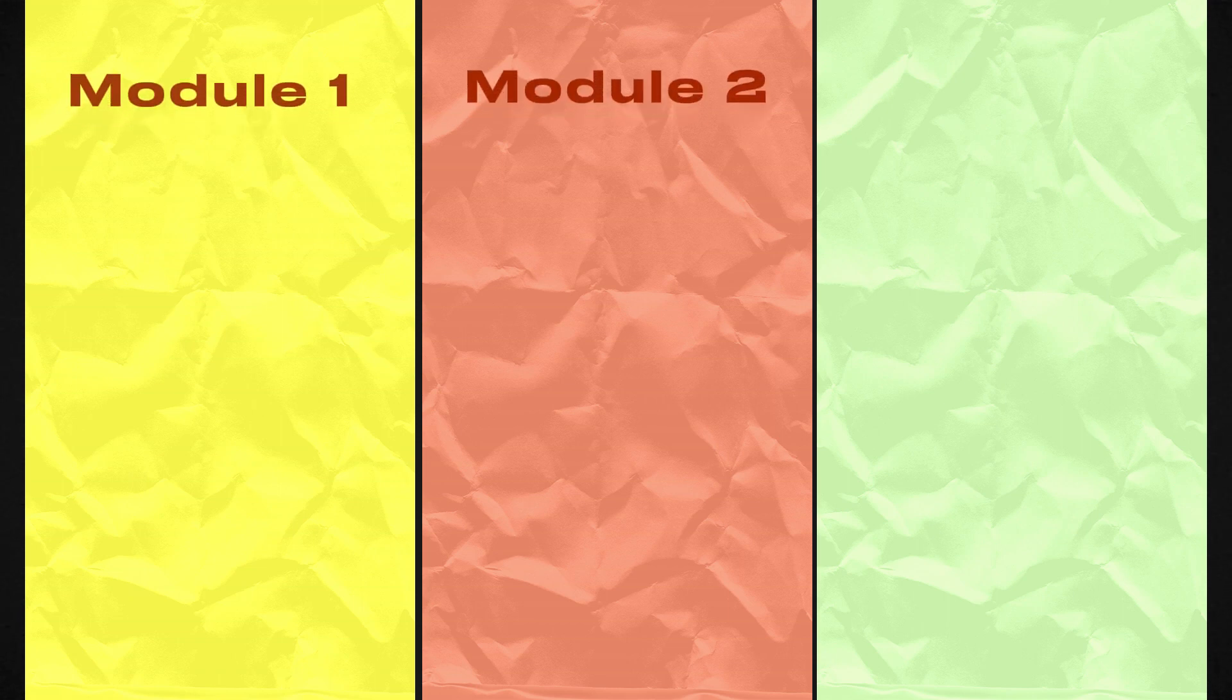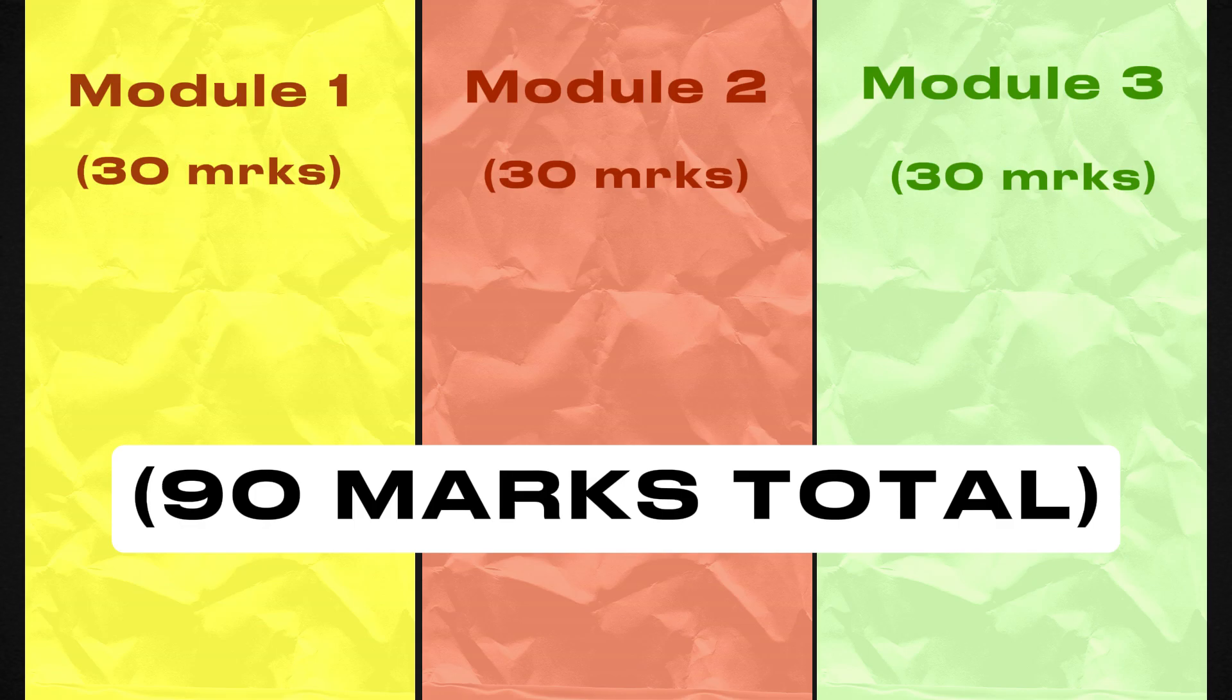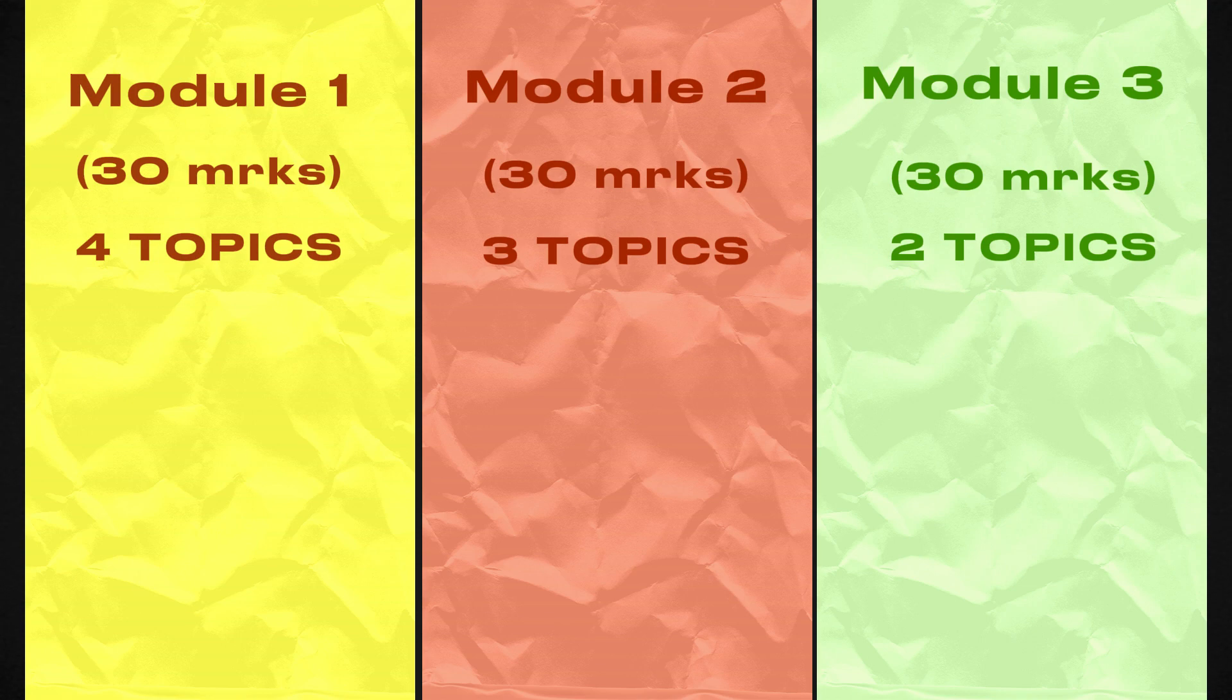Modules 1, 2, and 3 are valued at 30 marks each, forming a paper with a total of 90 marks. But an uneven distribution emerges, with CXC betting on 4, 3, and 2 topics from modules 1, 2, and 3 respectively.